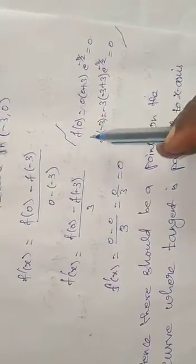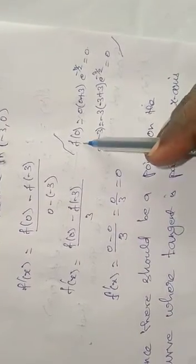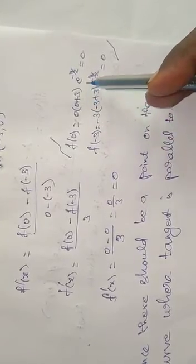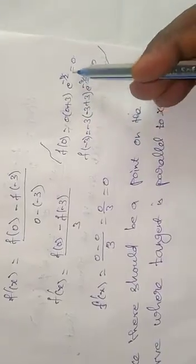I substitute x = 0 in the function. f(0) = 0(0+3)e^(-π/2). 0 into anything we get the value 0.